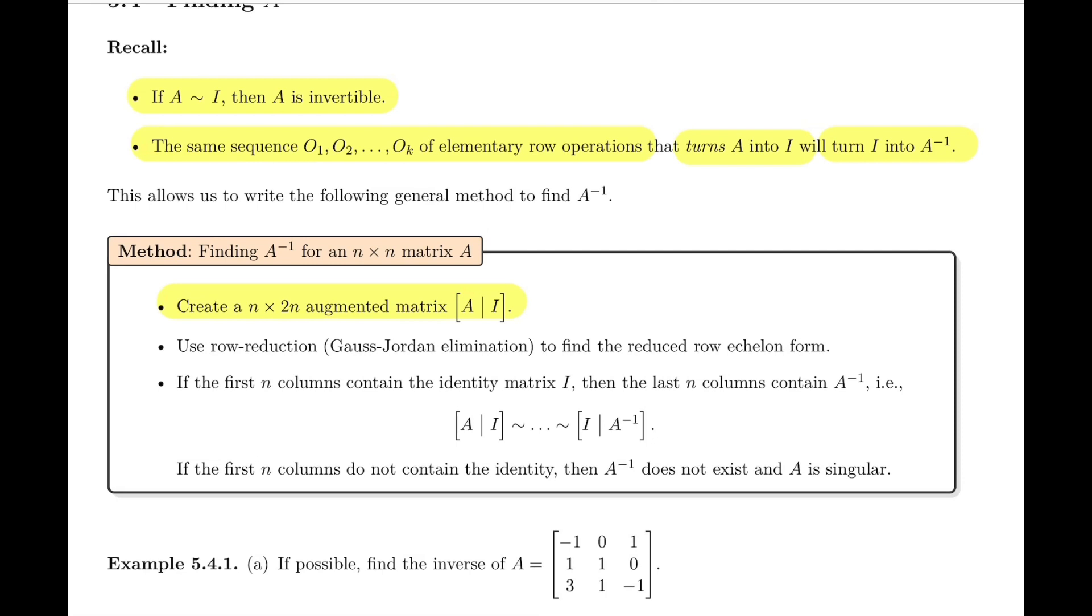Why 2n? Well, we're simply going to copy the identity matrix, the n-by-n identity matrix, next to the matrix A, and that's going to create this matrix that I called A|I.